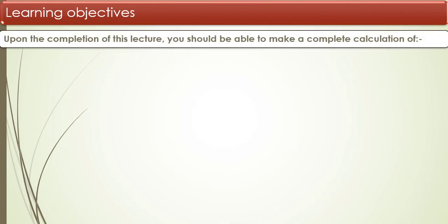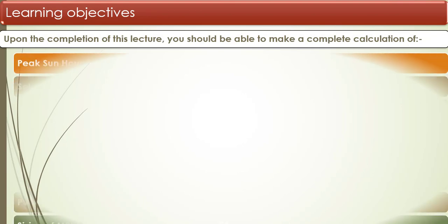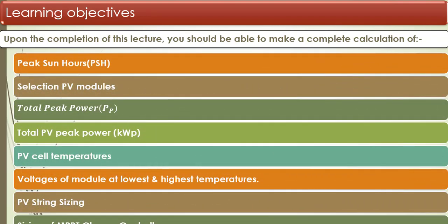The learning objectives: upon completion of this lecture we will be able to calculate peak sun hours, how to select the module and calculate the total peak power of the system, how to calculate photovoltaic cell temperatures and voltage of the module at lowest and highest temperature, how to size the PV string, and finally we shall discuss the sizing of the maximum power point tracker charge controller.